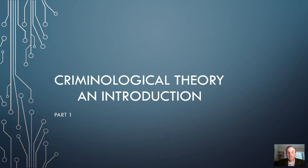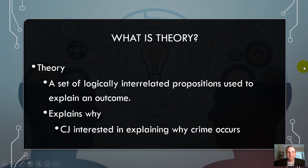Hi everyone, today we're going to do a quick introduction of criminological theory and discuss what theory is, what knowledge is, and what paradigms are and how they're relevant in understanding why crime occurs and the progression of knowledge. A theory is a set of logically interrelated propositions used to explain an outcome. In criminal justice, we're really concerned with explaining why — why crime occurs, why victimization occurs, what factors are associated with it.